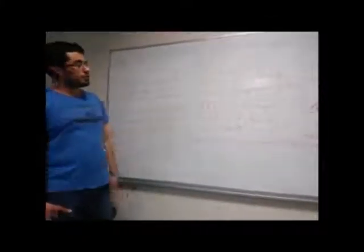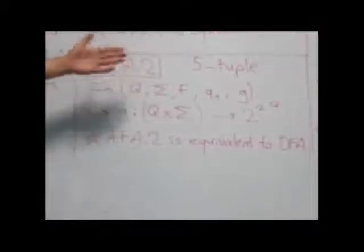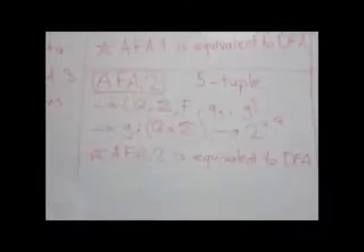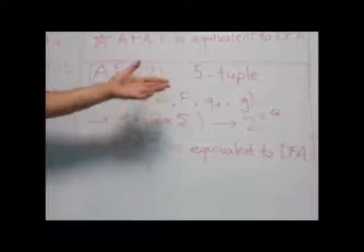In AFA2, I provided another definition. It's a five-tuple again, consisting of a set of states, an input alphabet, a final set of states, a start state, and a transition function. But now, the transition function is from a set of states and a symbol to a power set of the states.